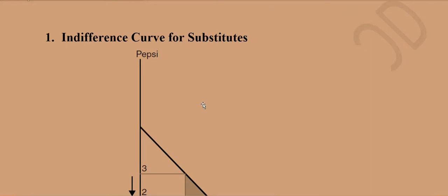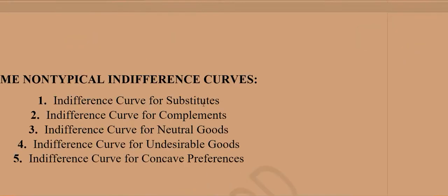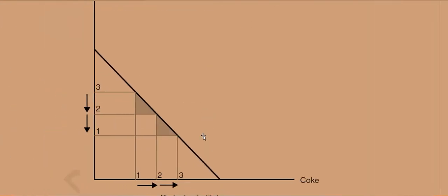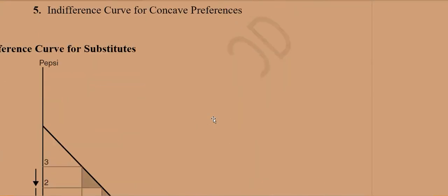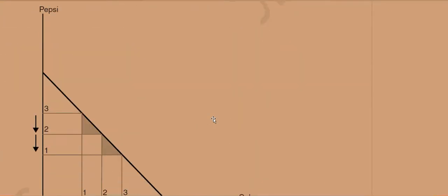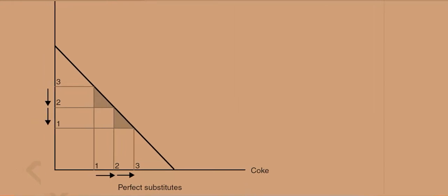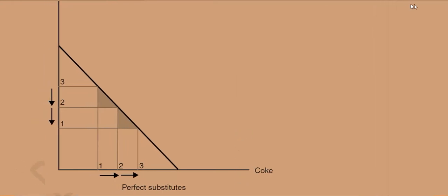It's about the indifference curve for substitutes. Here we are taking a famous example where Coke and Pepsi are considered to be two goods that are substitutes, and yes they are. One can have Pepsi instead of Coca-Cola and vice versa.